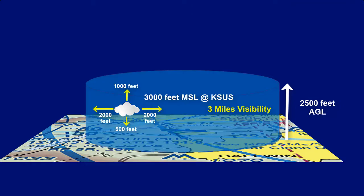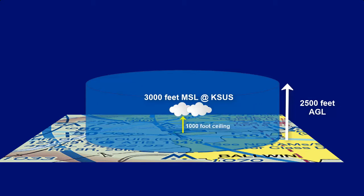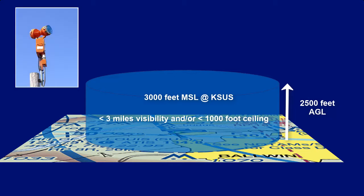Weather minimums for Class D are 3 miles visibility with 1,000 feet above clouds, 500 feet below clouds, and 2,000 feet laterally. If you are taking off or landing, you will need at least a 1,000 foot ceiling. If conditions are less than 3 miles visibility or less than 1,000 feet ceiling or both, the airport will have the rotating beacon on during the day indicating such.